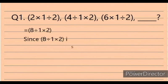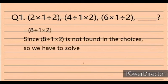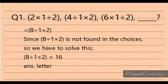The next sequence is A divided by 1 times 2. Since that expression is not found in the choices, we have to solve it. A divided by 1 times 2 equals 16. The answer is letter C, 16.